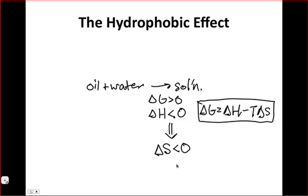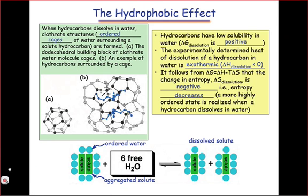This implies that as a hydrocarbon dissolves in water, a more highly ordered state is reached. S is a representation of disorder, and so as we decrease S, we increase the order in the system. We can see how this works by considering the image at the bottom of this slide.